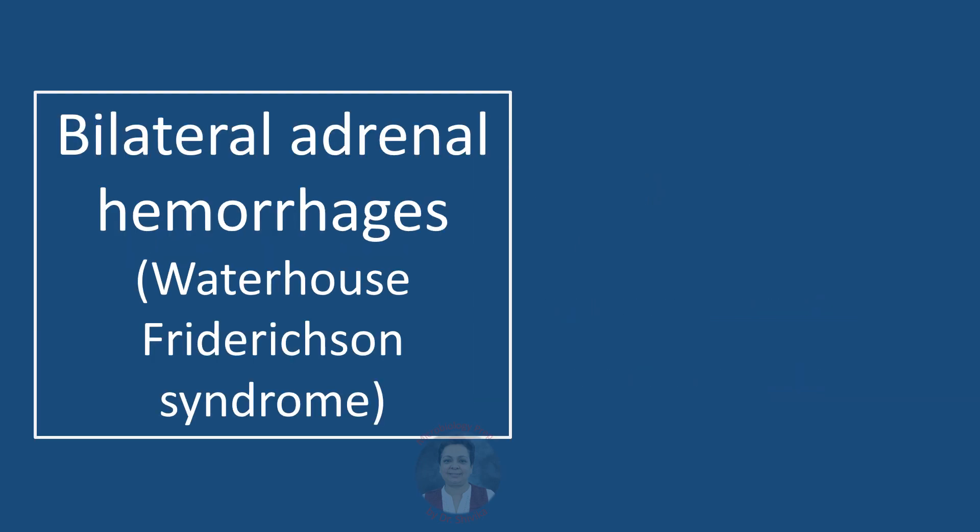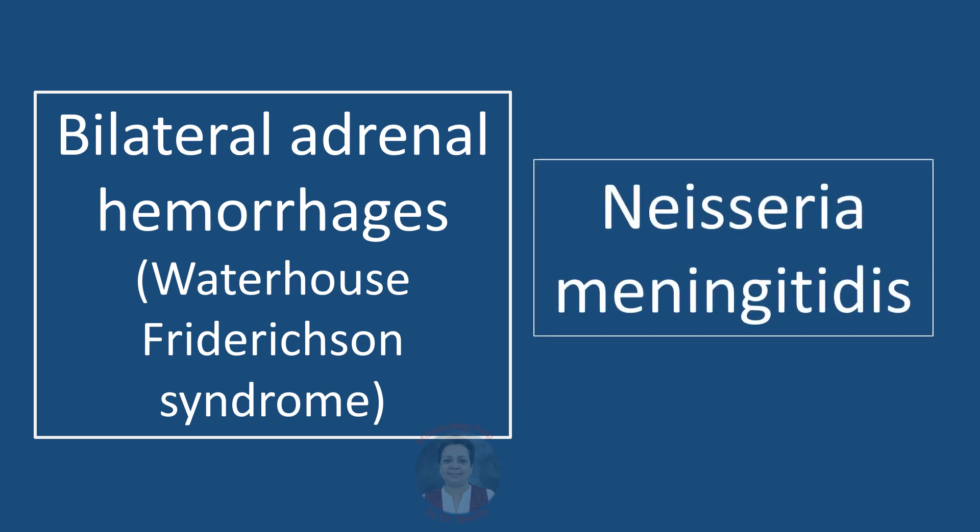If we have symptoms of bilateral adrenal hemorrhages — that is called Waterhouse-Friderichsen syndrome — it's a septicemia which has led to symptoms like lowered blood pressure, hyponatremia, and hyperkalemia. The likely agent causing that septicemia is Neisseria meningitidis.